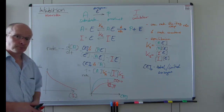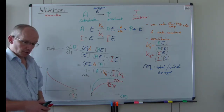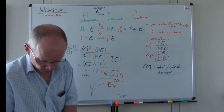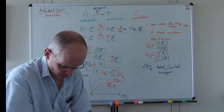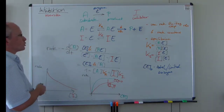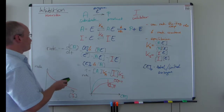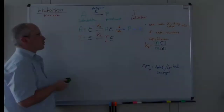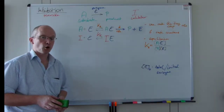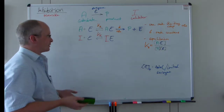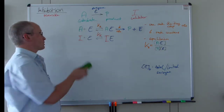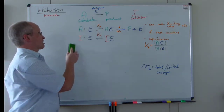That is all about reversible inhibition in its simplest form. That is the first example you can work through. Now let's look at another one, which is called non-competitive inhibition.